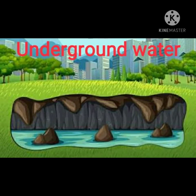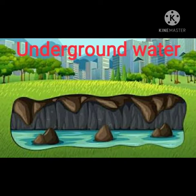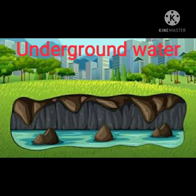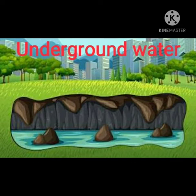Underground water: Some of the rain water seeps through the layers of soil or fractured rocks and collects there. This is called underground water. Most of the fresh water on the Earth is in the form of underground water. Sometimes, due to high pressure, this water sprouts out in the form of springs. Underground water is obtained for use by digging wells, tube wells and hand pumps, which form underground water sources.